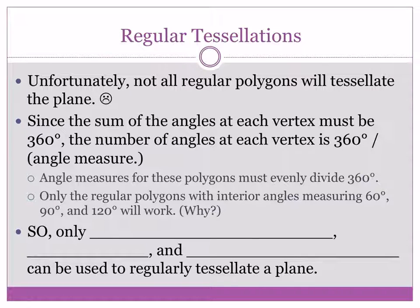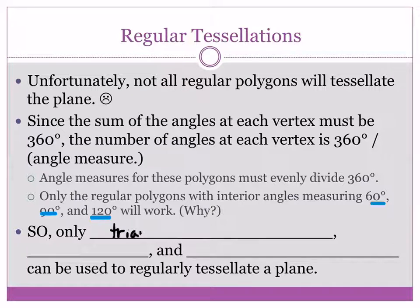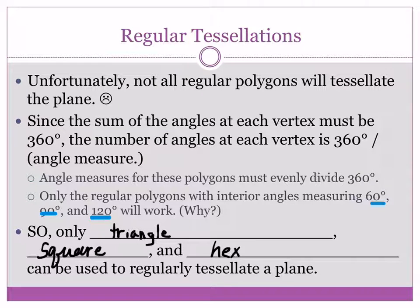There are only three shapes with angles of 60, 90, and 120 degrees that work for regular tessellations. A 60-degree angle gives us the equilateral triangle. A 90-degree angle gives us the square. And 120 degrees comes from the regular hexagon. So these are the only three regular shapes that will regularly tessellate a plane. There are other ways to get shapes that will tessellate as well.